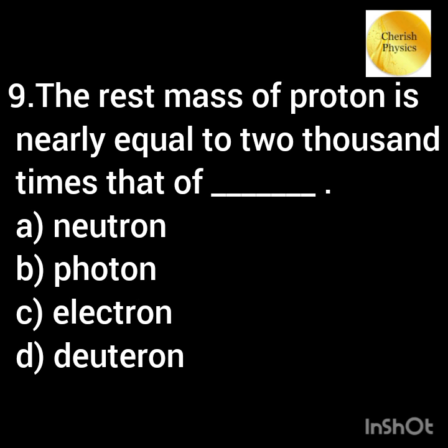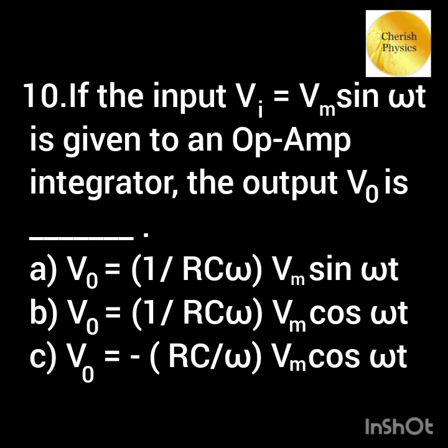The rest mass of a proton is nearly equal to 2000 times that of dash. If the input Vi equal to Vm sin(ωt) is given to an op-amp integrator, the output V0 is equal to?